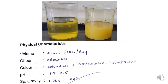For a normal person, 2 to 2.5 liters of gastric juice is secreted daily. It is odorless and colorless with a transparent appearance. The pH lies between 1.5 and 2.5, and specific gravity lies between 1.006 and 1.009.